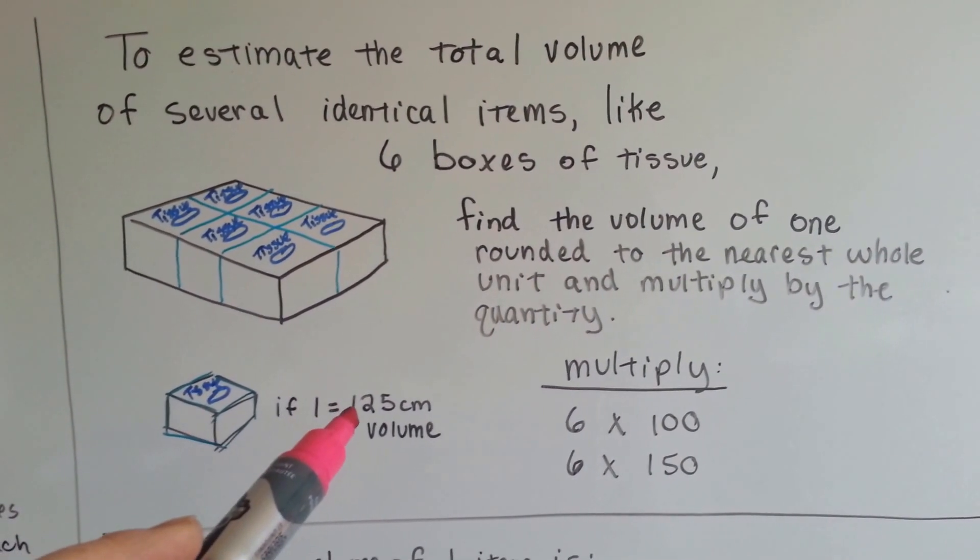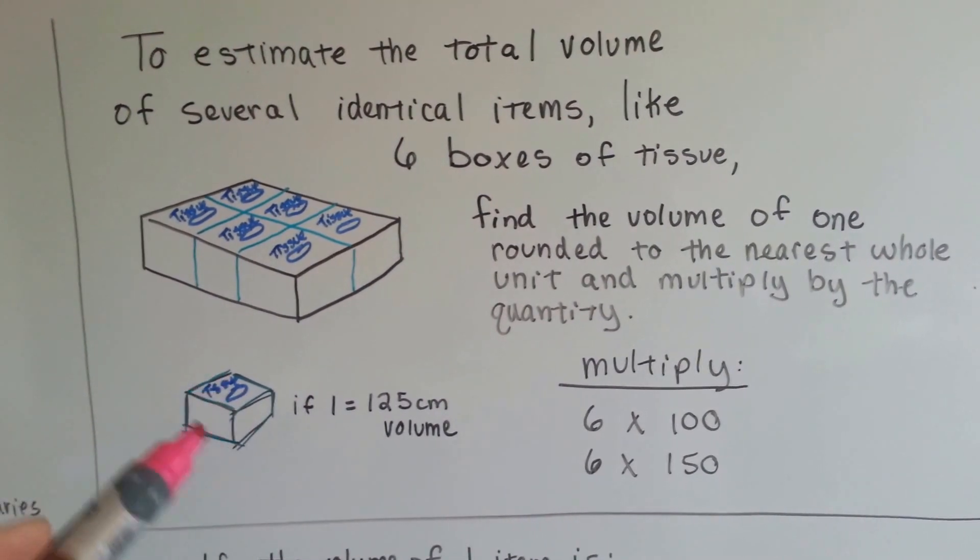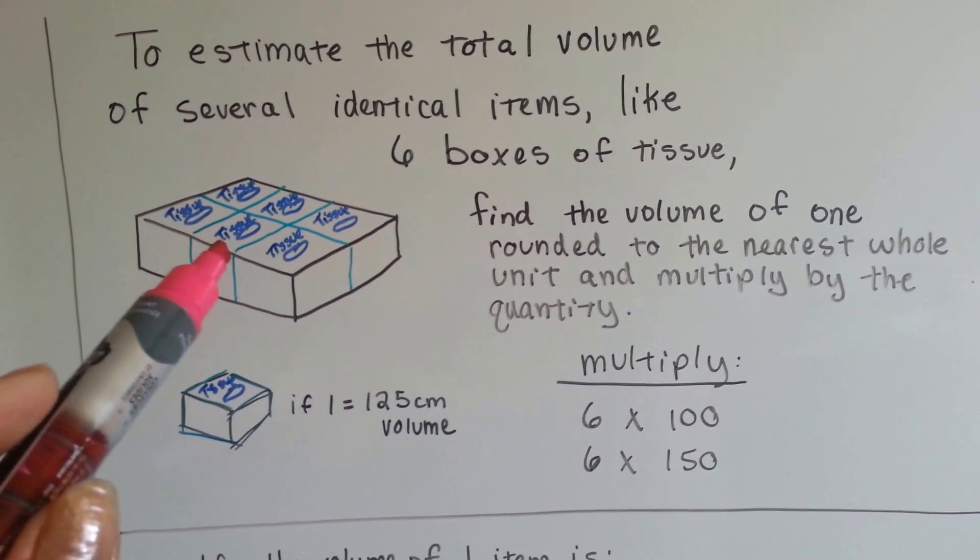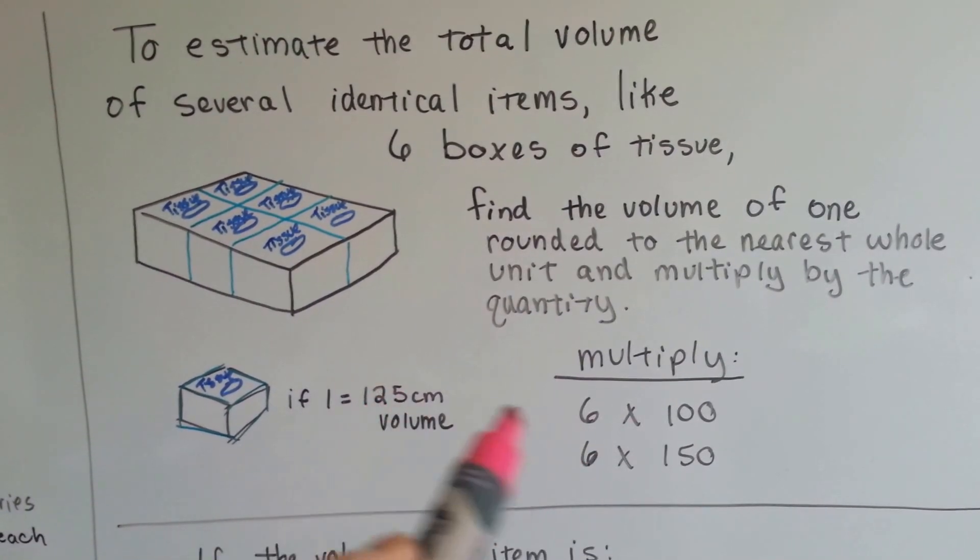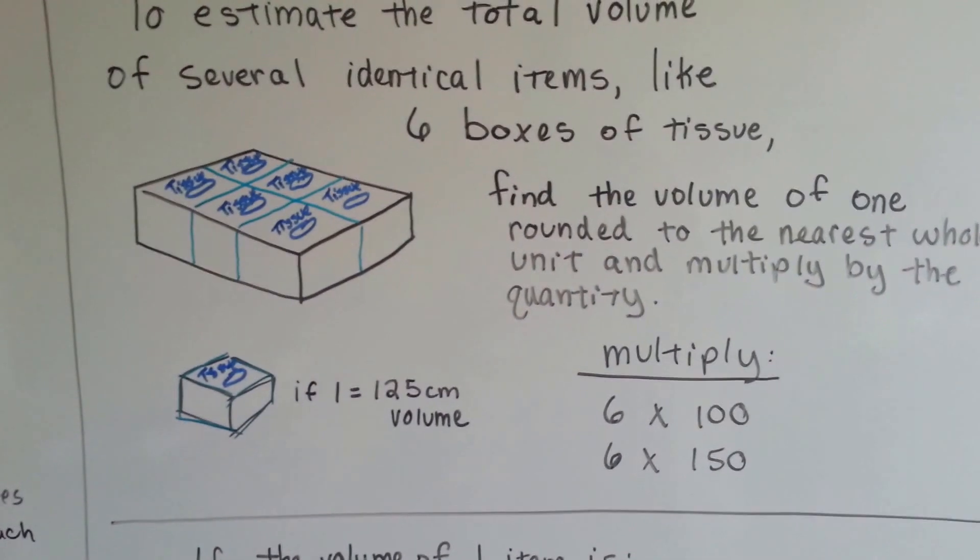If one of them is one hundred and twenty-five centimeters for itself, and you need to find six, you can round the one twenty-five to a hundred or to one fifty, and then multiply by six, just to get an estimate.